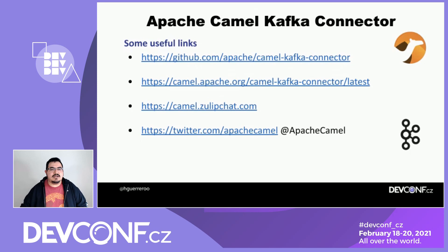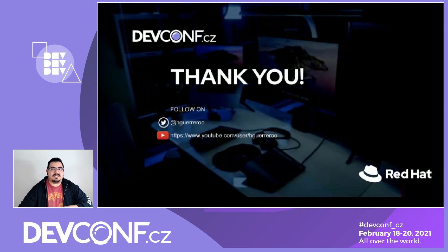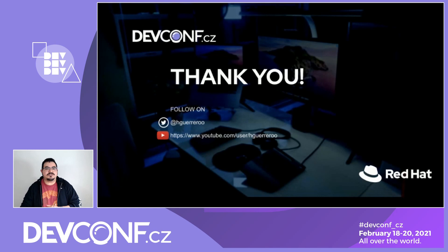I want to share some links: the Camel Kafka connector GitHub project, the Zulip chat, and Apache Camel for more in-depth information. I hope you liked this session. I really appreciate the invitation to join you. If you want to know more about what we are doing in the APIs and event-driven architecture world, you can follow me on Twitter at H Guerrero — with double O at the end — or subscribe to my YouTube channel for more demos, examples, and videos on working with APIs and messaging.